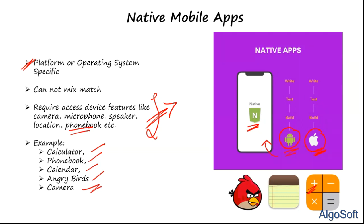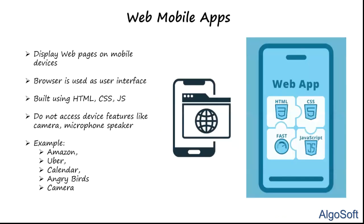To summarize: native apps are platform-specific, need access to device features, and cannot run across operating systems. A native app cannot move outside its operating system boundary.